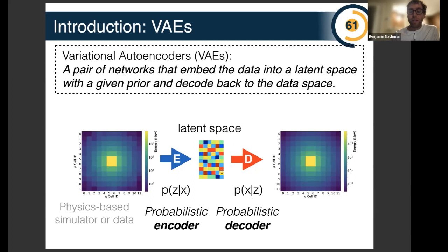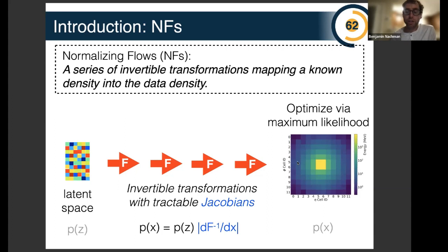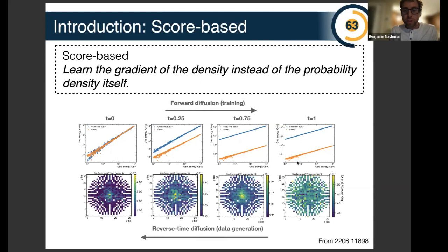With normalizing flows, you start from some latent space, apply a series of invertible transformations, and use the usual change-of-probability rule to get the density — you start with a Gaussian and map it through to get some complicated density, training with maximum likelihood. Score-based models learn the gradient of the log density, called the score, and there are reasons why learning the score can be superior to learning the density itself. One way of training these is with the diffusion model, where you smear the data until it matches a Gaussian and then solve the stochastic differential equation to invert it.